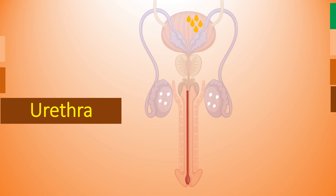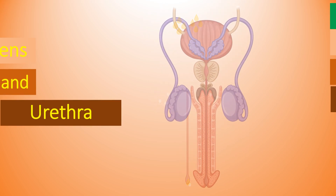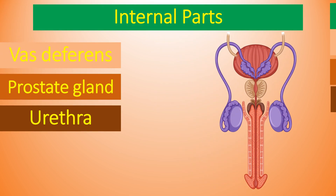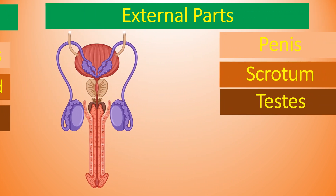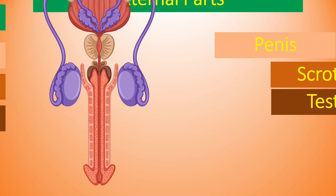The urethra serves both the reproductive and urinary systems. It helps to expel semen when the man reaches orgasm. As you can see here, the sperm is moving and semen is also transported through this passage.